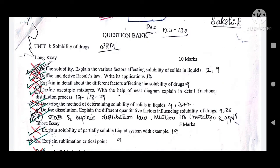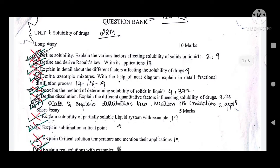The first one is a long essay question of 10 marks: define solubility and explain the various factors affecting solubility of solids in liquids. This is a very important question. You have to define what solubility is, then explain the factors affecting it. Solids in liquids — for example, a tablet dissolving in water.